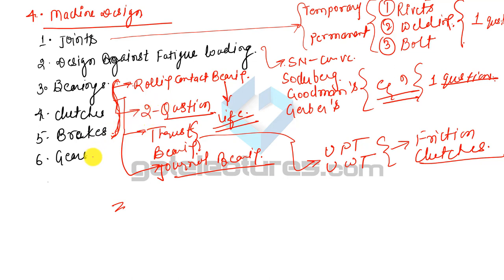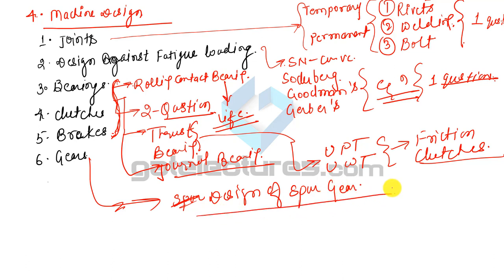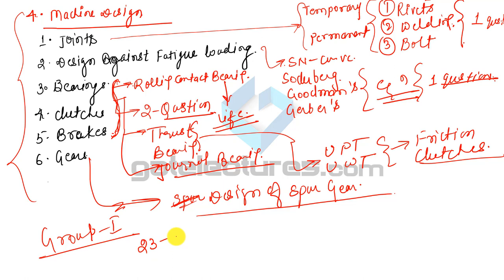In Machine Design, Gear covers the design of spur gears. This completes the Group 1 analysis which contains 23 to 25 marks total. Now let us move to the analysis of Group 2.